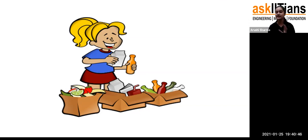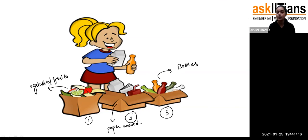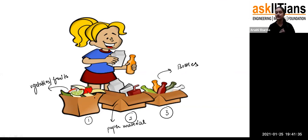As you can see, there is a girl who has three boxes — one, two, and three. She is separating all of the material: in one box she has kept all the vegetables and fruits, in another she has kept bottles, and in the third she has kept paper material. She is sorting all of these materials into different boxes according to their similar properties.